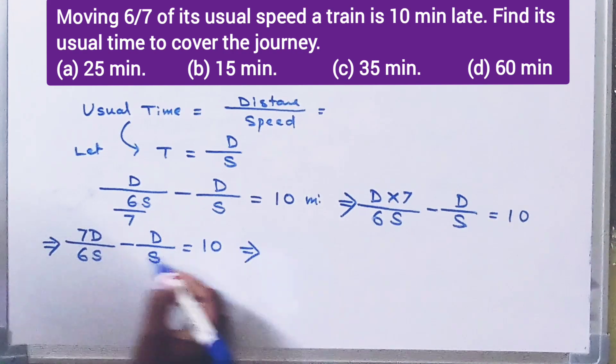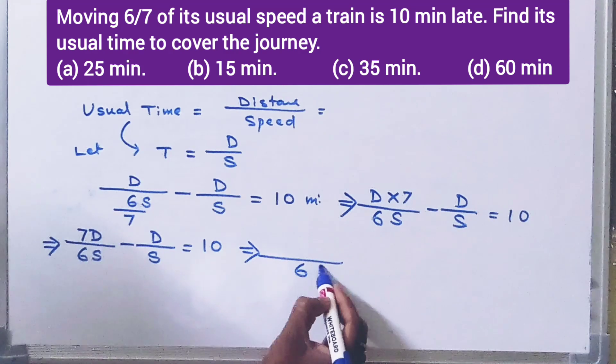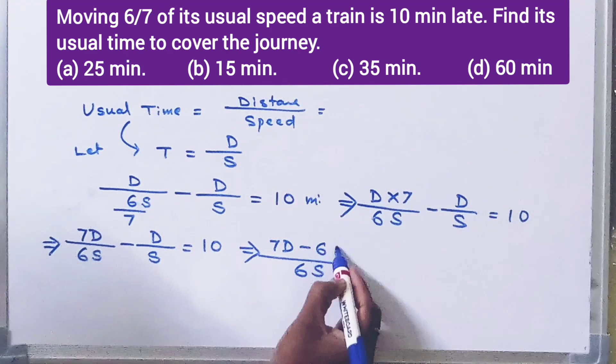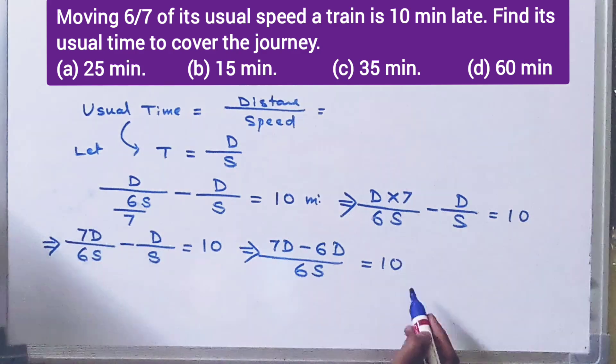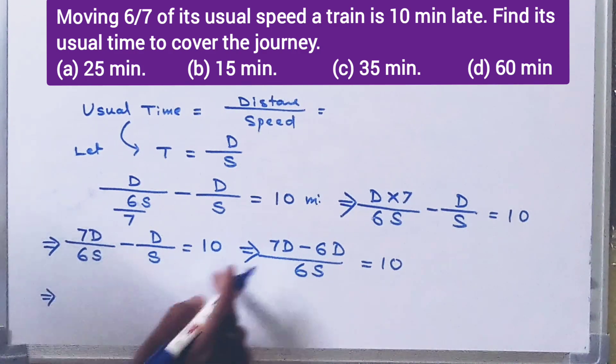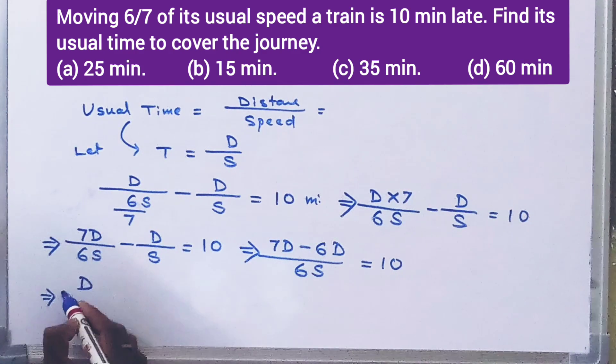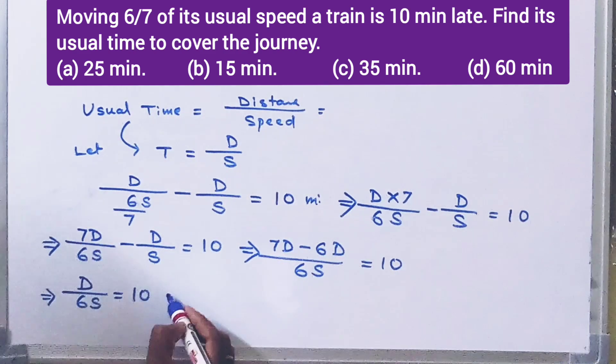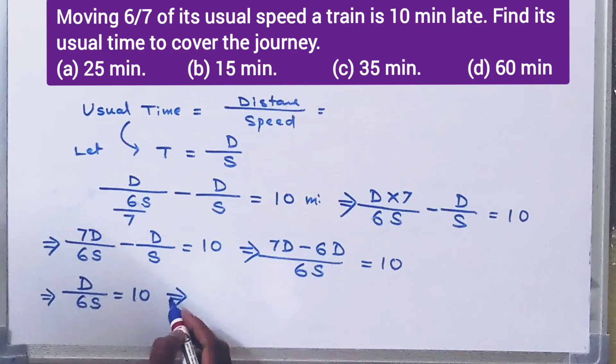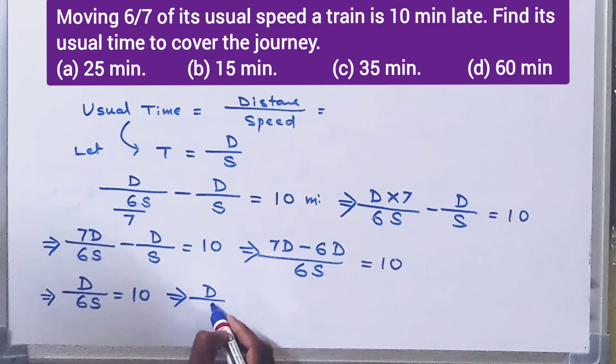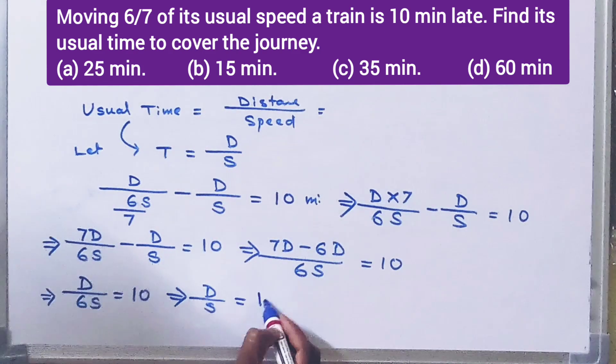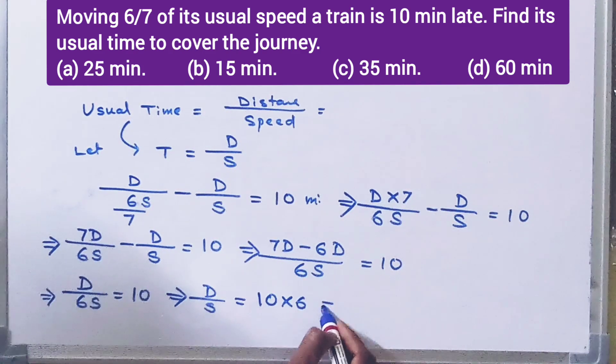That implies, taking LCM 6S, 7D minus 6D is equal to 10. Then, D by S is equal to 10 into 6.